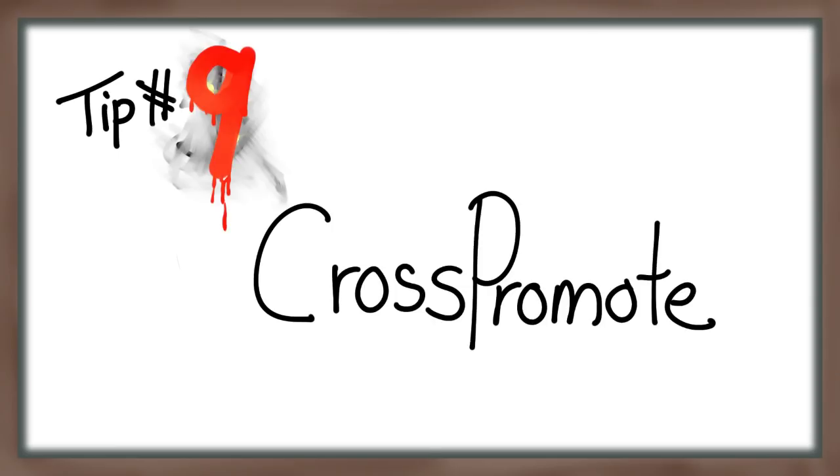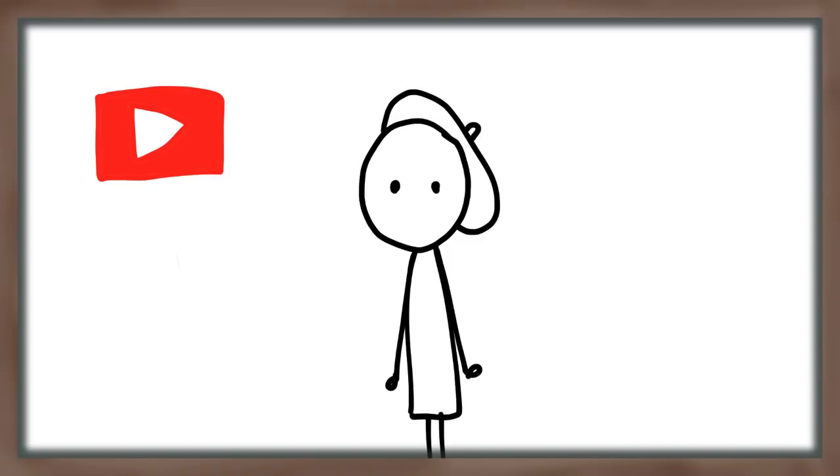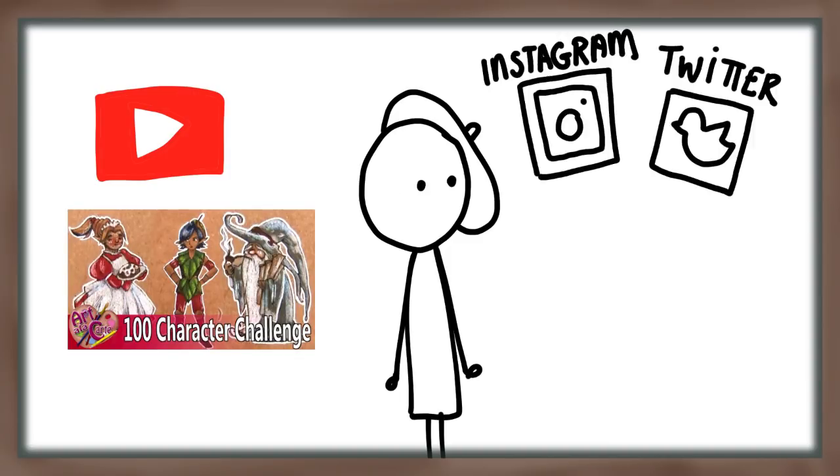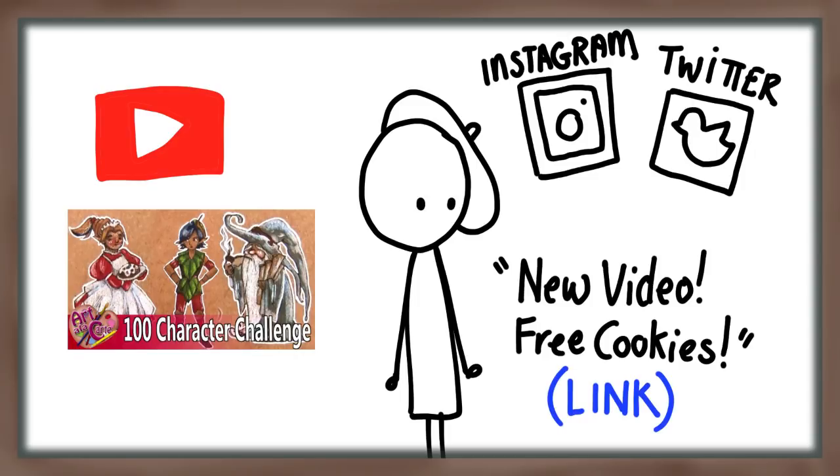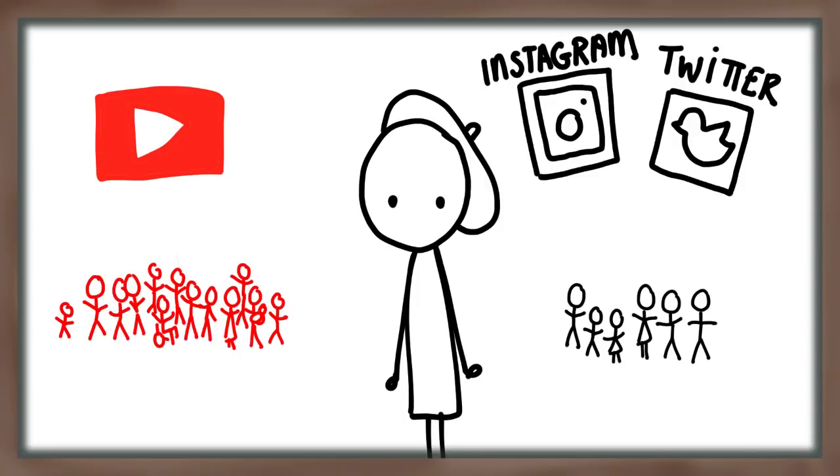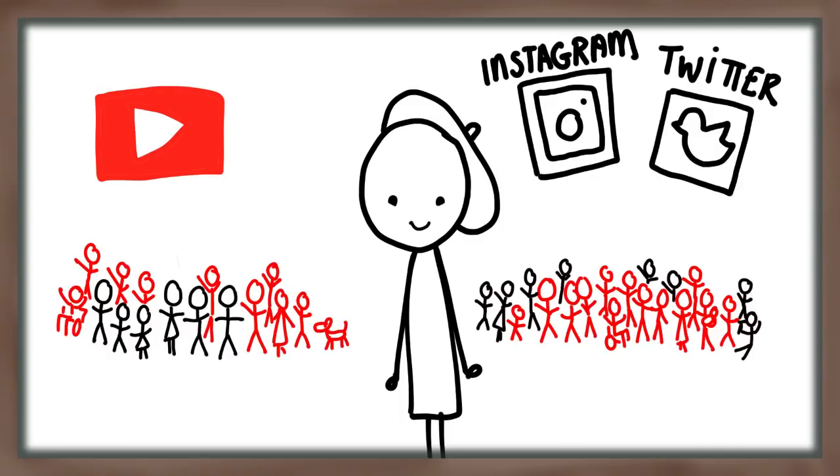Tip number nine is to cross promote. So you guys will notice if I post a video on my YouTube channel, I'll generally promote that on other social media. So I'll make a post about that on Instagram or on Twitter. I might have different sets of people watching my Instagram feed than I do on my YouTube channel, so if I show them something that they're interested in, it might pull those viewers onto my YouTube channel and vice versa.